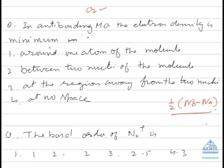It means that the correct answer will be the electron density will be minimum between the two nuclei of the molecule. In the real sense, there will be no electron density between the two nuclei, so this is the best answer.